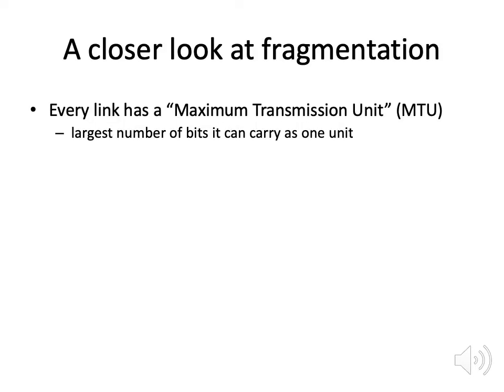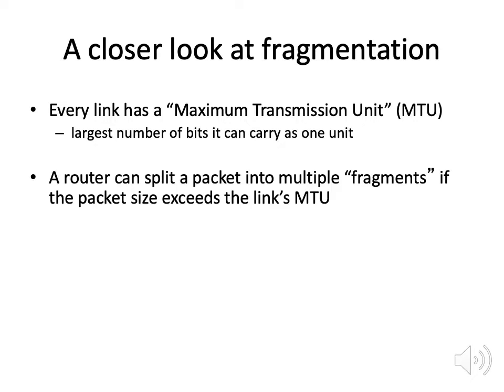Every network has some maximum transmission unit or MTU, which says how many bits is the largest amount it can carry as one unit or one packet. What happens if you send a packet from one network to another network that have different maximum transmission units? A router is allowed to split a packet into multiple fragments if the packet size exceeds the destination link's maximum transmission unit.